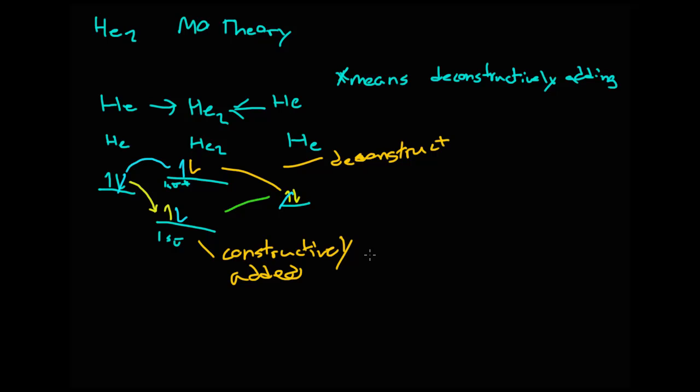When we put it into the formula of bond order, bond order is the number that are constructively added minus the number of orbitals that are deconstructively added, and then we divide this whole thing by two.